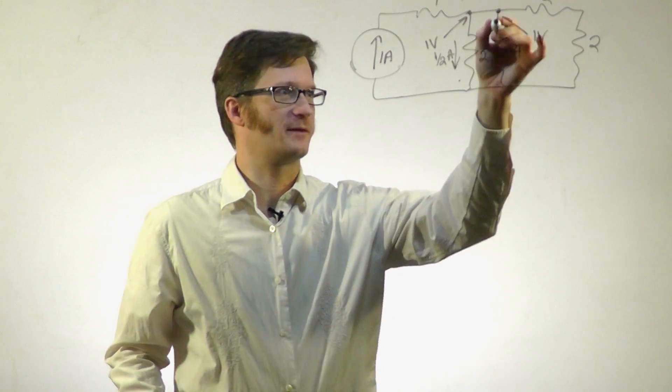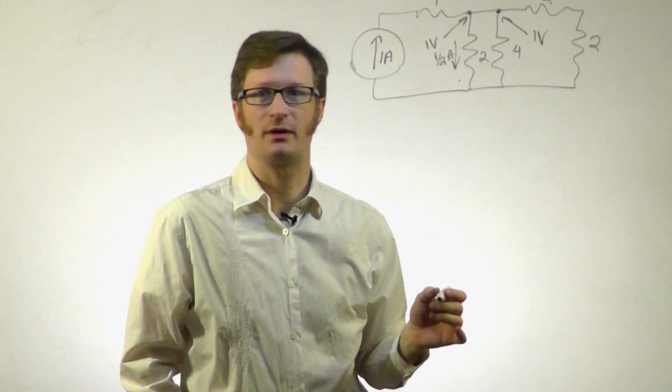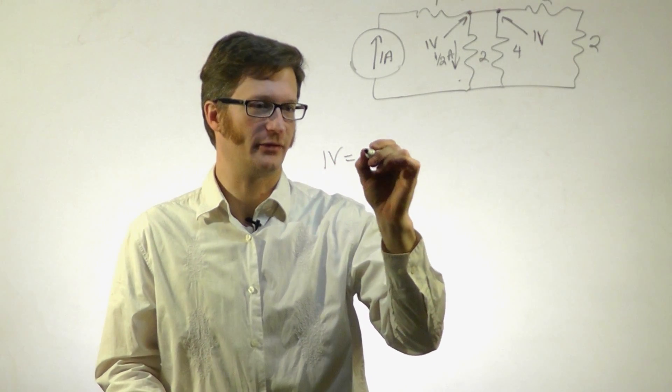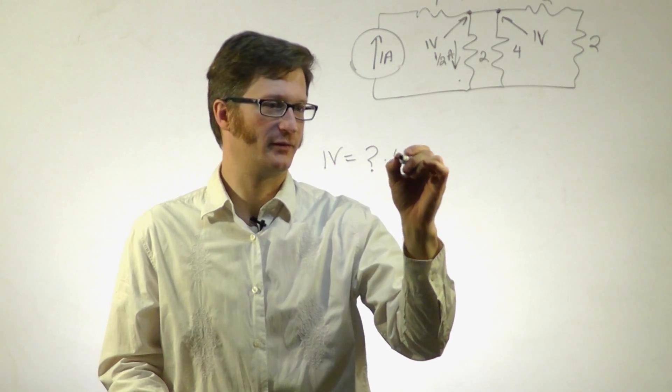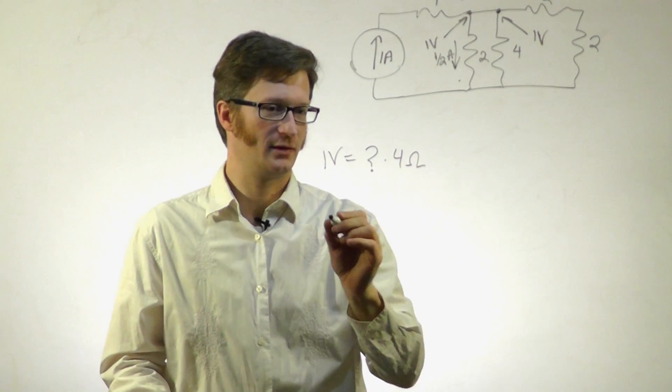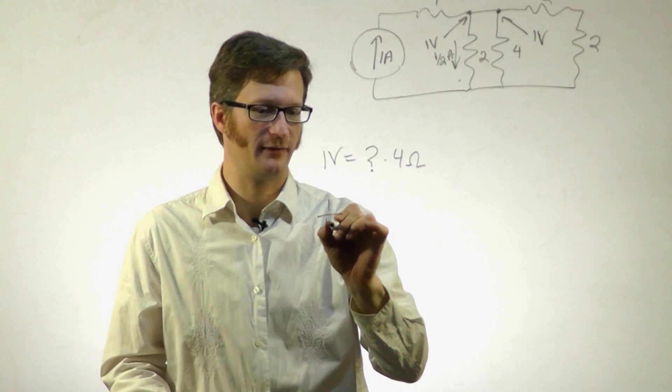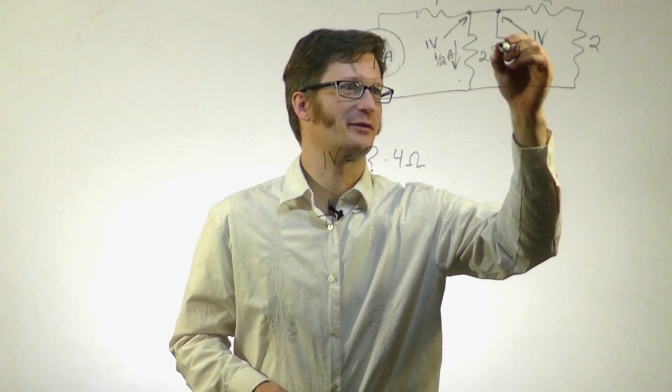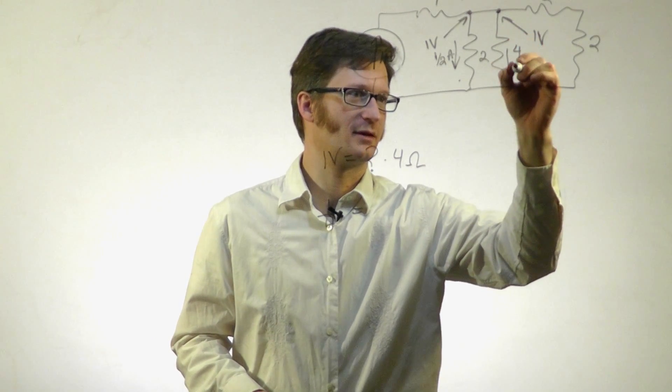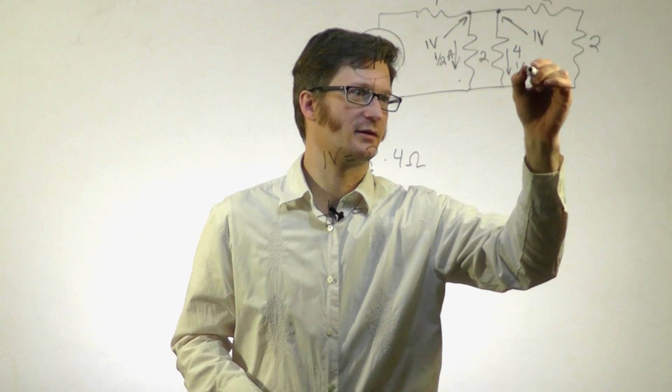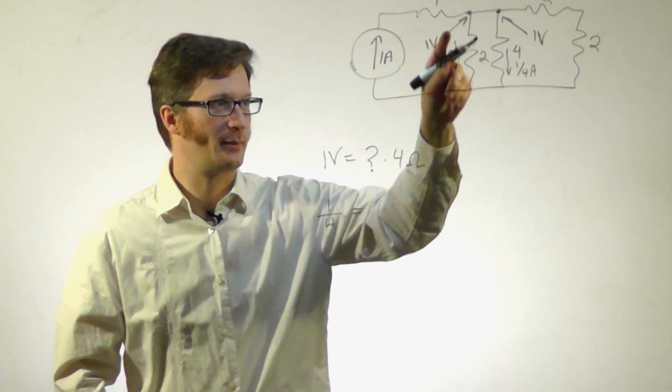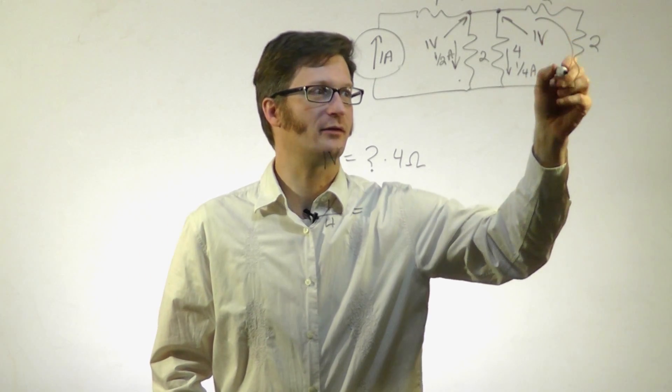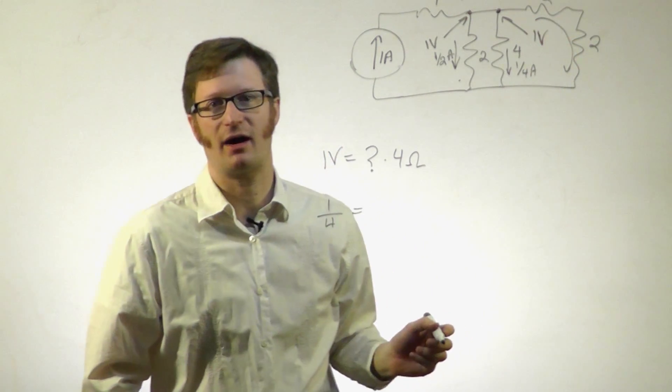From here to here, we can figure out our current. 1 volt equals an unknown current times 4 ohms. 1 divided by 4 equals 1/4. Going down through here, I have 1/4 amp. We've used up 1/2 amp here and 1/4 amp here, so I know now that going through these resistors, I have 1/4 amp left.